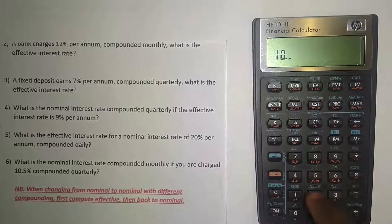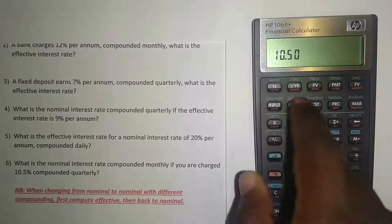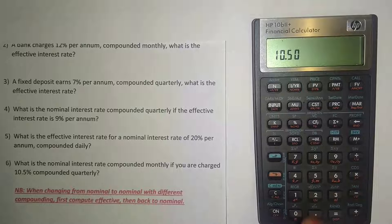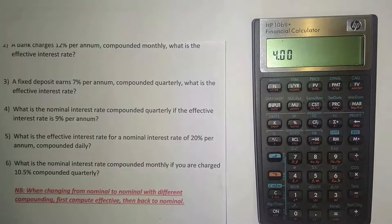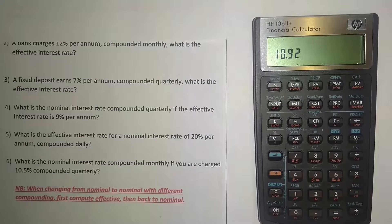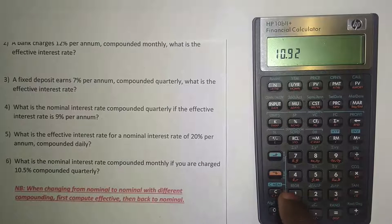We're charged 10.5% compounded quarterly — that's nominal. Put in 10.5, press the orange button, then I/YR for the nominal percentage. Then put 4 compoundings per year for quarterly, press orange, then PMT. Then press orange and PV to get the effective interest rate. The effective interest rate is 10.92%.